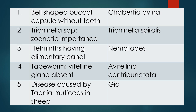It can be asked from answer to question or question to answer. Question one: Bane-shaped buccal capsule without teeth. Answer is Chabertia ovina. Question two: Trichinella species which has zoonotic importance. The answer is Trichinella spiralis.